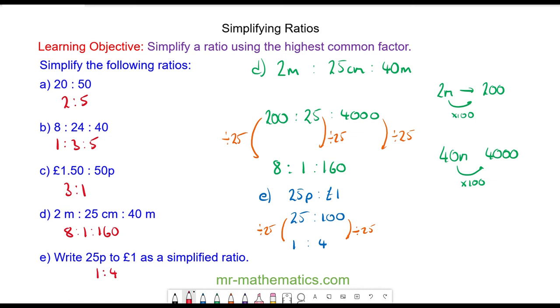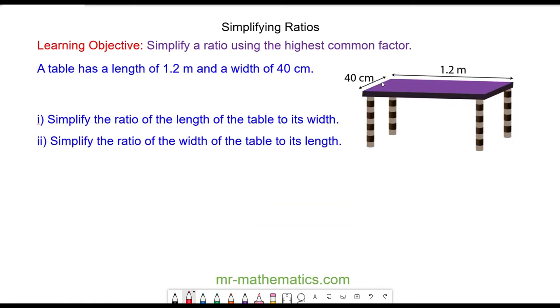Let's try one more question. In this question, we've been told that a table has a length of 1.2 meters and a width of 40 centimeters. Do you want to try and simplify the ratio of the length to the width, and for part 2, the ratio of the width to the length? You can pause the video and resume it when you're ready.